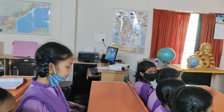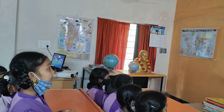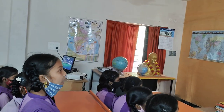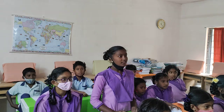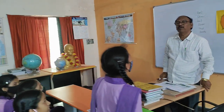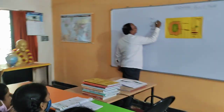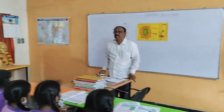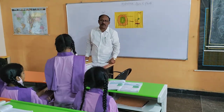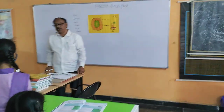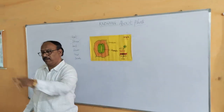Where can we see the stem? Above the soil — very good, give her a clap. We can see the stem above the soil. What is the function of the stem? It supports the branches, leaves, and parts of the plant. Very good.